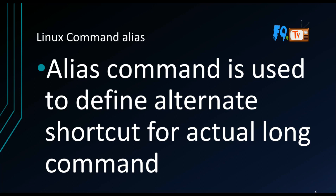How can you define an alias? Aliases are of two types: one is a global alias and another is a local alias. A global alias is defined and can be used for all users in the Linux machine, and a local alias is only applicable for a particular user. Every user can define their commands as a shortcut so that execution would be faster.